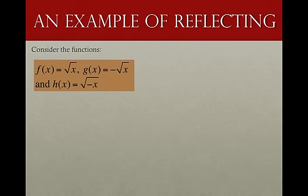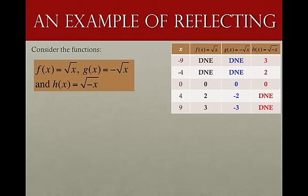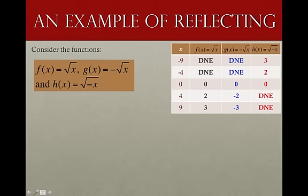Let's look at an example that involves both. We have our original function f equal to the square root of x, and then we look at g and h. With g, I stick the negative sign out in front of the square root; with h, I stick the negative inside the radical. For g, putting the negative out in front is flipping it over the x-axis — changing the sign of our y's — so our domain stays the same but our y's just change sign.